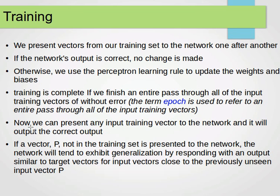Now, we can use the training data. We can present any input training vector to the network, and it will output the correct output. Now, if we have a new vector, unknown vector, not from the training data, let's say from a test data, we present it to the perceptron. So it will be a vector of values, the input values. The network will tend to exhibit generalization by responding with an output similar to target vectors for the input vectors close to the previous unseen input vector, so it hopefully will classify it correctly.